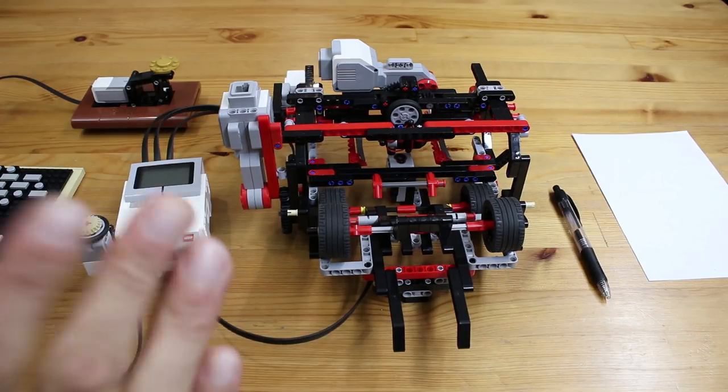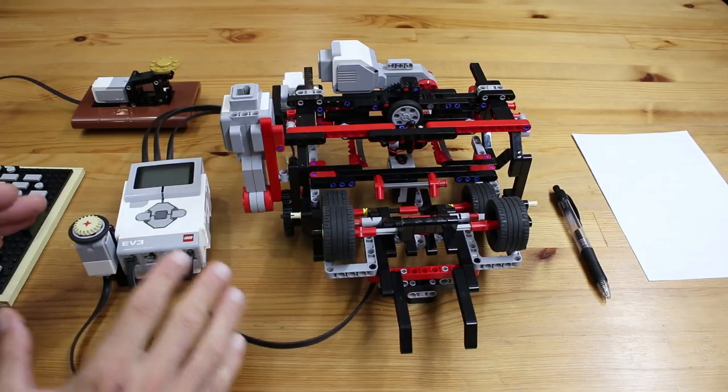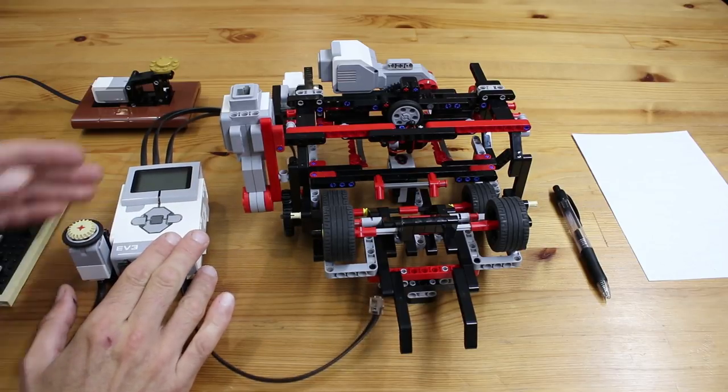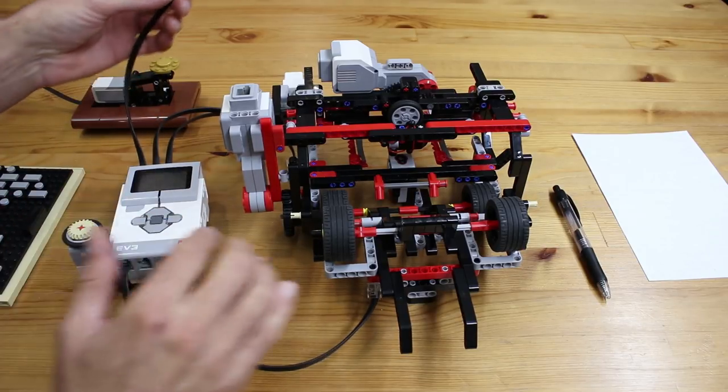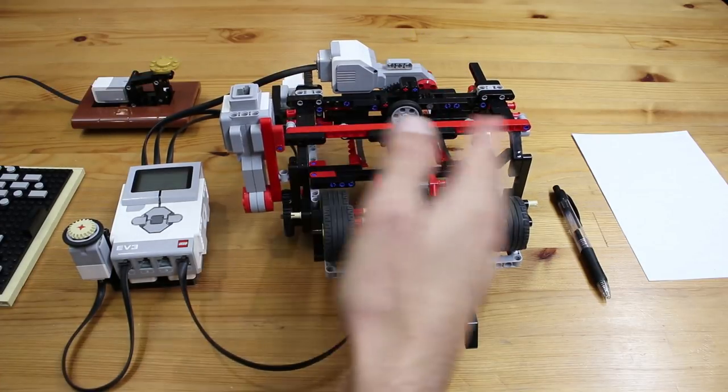Once you have finished going through the building instructions, you should get something that looks like this, and the first thing we're going to do is wire it up to the EV3 unit. Motor port A is connected to the large motor at the top which controls moving the pen from side to side.